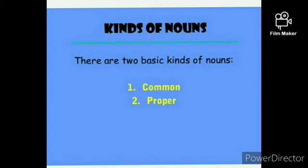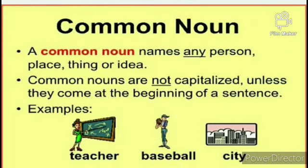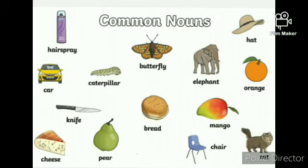Children, do you know how many kinds of nouns we are having? They are common noun and proper noun. Now we will learn about common noun. A common noun names any person, place, thing or idea. Common nouns are not capitalized — remember everyone, common nouns are not capitalized unless they come at the beginning of a sentence. When they come at the beginning, then only they will be capitalized. For example: teacher, baseball and city.